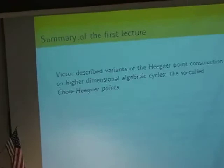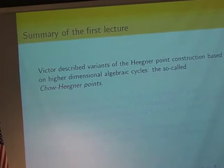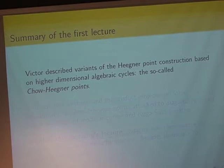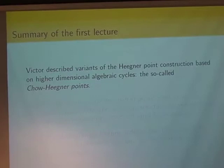I want to begin by summarizing what was done in our first lecture. Victor described variants of the Heegner point construction based on higher-dimensional algebraic cycles on varieties, and we coined the term 'Chow-Heegner points' to describe these generalizations of Heegner points based on higher-dimensional algebraic cycles.